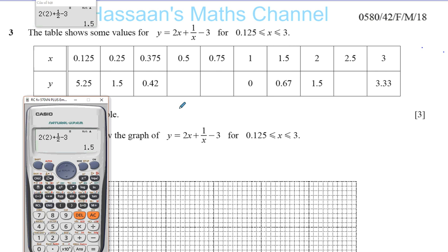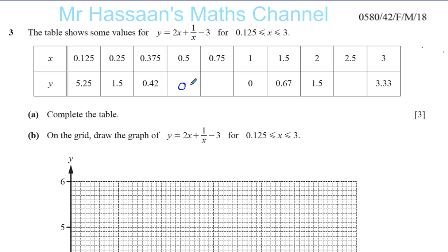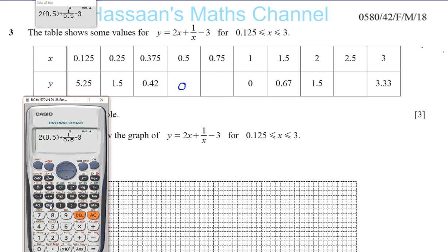So I can then quite confidently go ahead and put in the missing value, so I can just change this 2 for 0.5. I must put it every place where that x was, so 2 there becomes 0.5, press equals, and I get 0.0, so when x is 0.5, y is equal to 0. And I do the same thing for 0.75, so 0.75, change that for 0.75, press equals, I get minus 1 over 6.